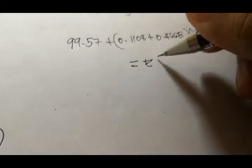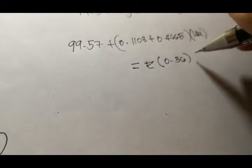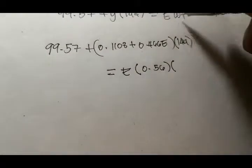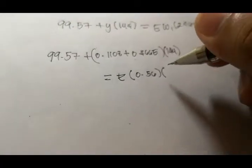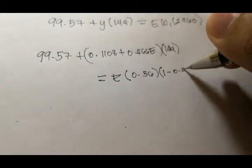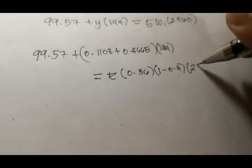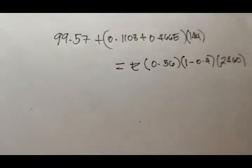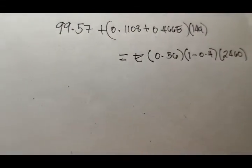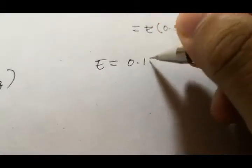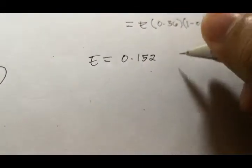E times the water in the feed, so 0.56 times W1, which is 0.56E times (1 minus 0.4) times 2460. So you use the shift solve function of your calculator or just do the algebraic simplification.